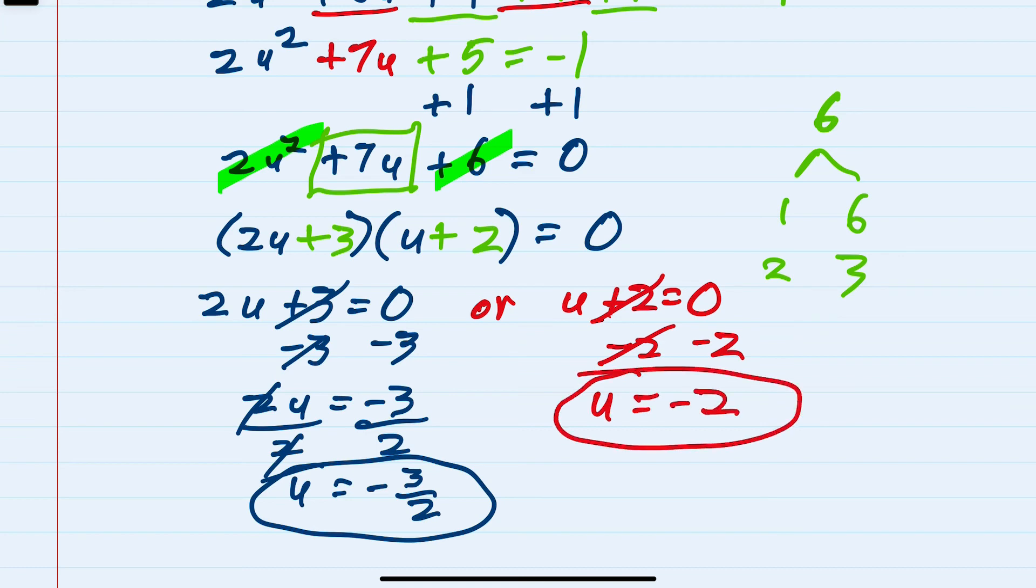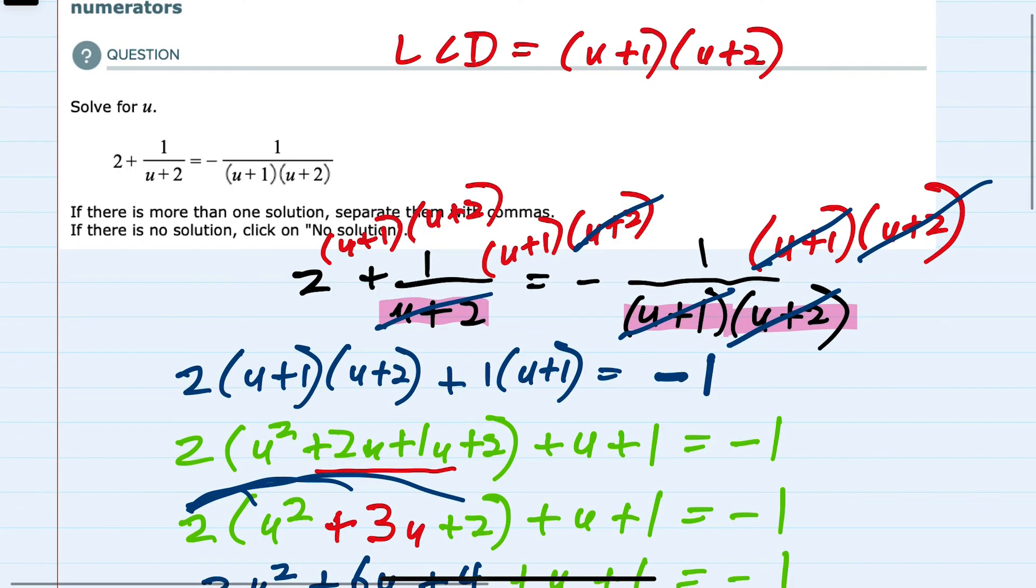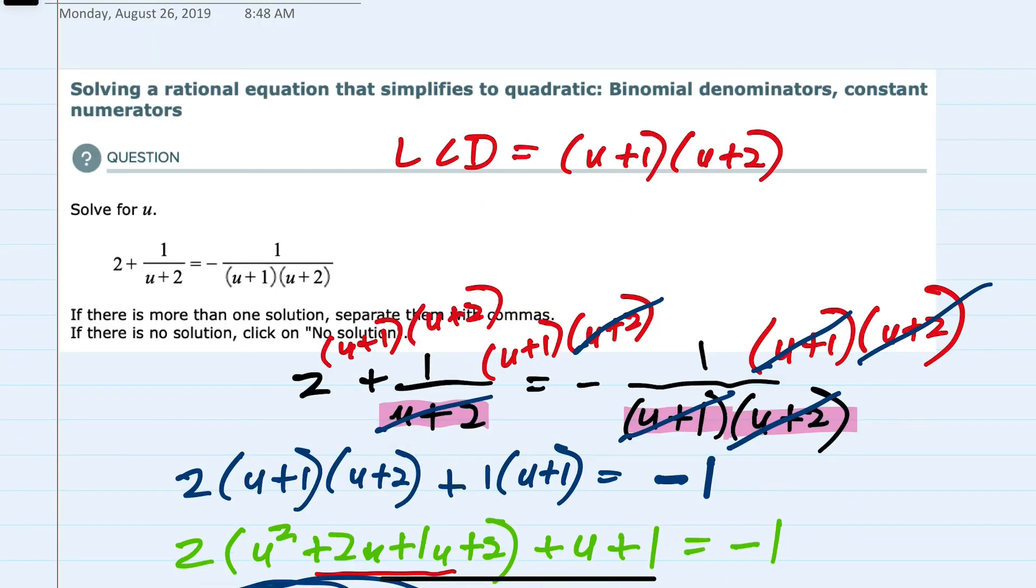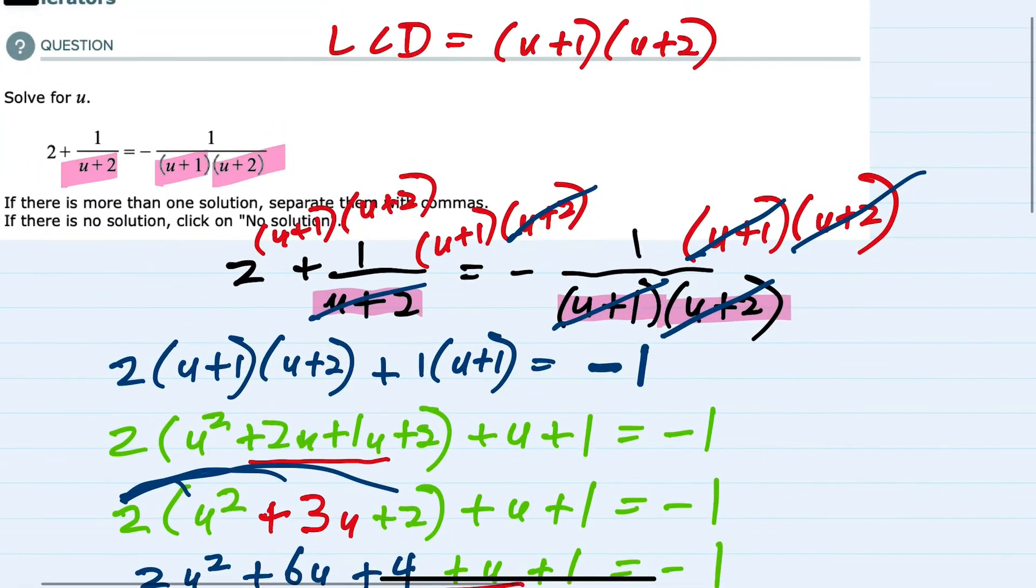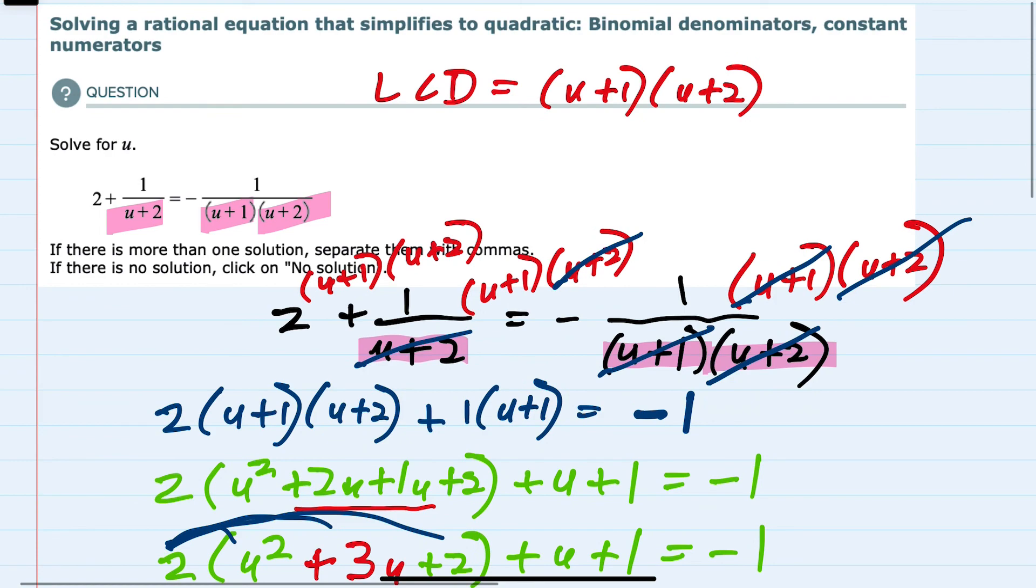And lastly, I want to check the equation to make sure neither of those solutions give me a 0 in the denominator. Looking back at our denominators, if x were the first solution, negative 3 halves, that's not going to give us a 0 in the denominator. However,